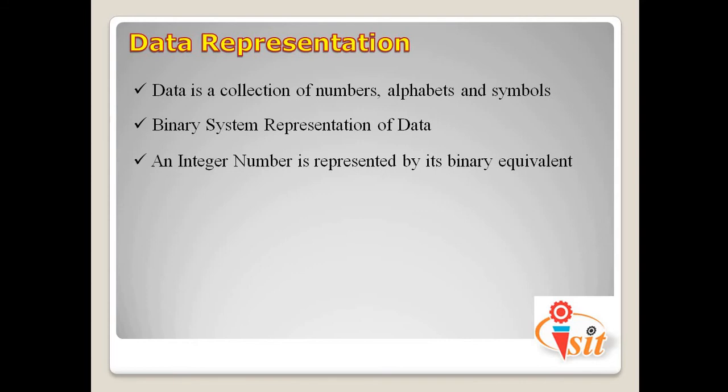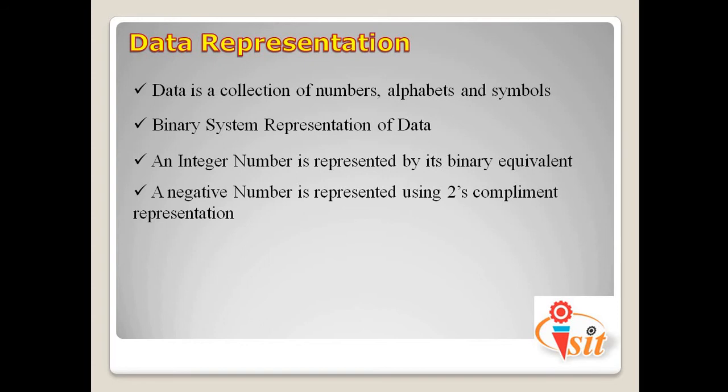If we have integer numbers — as already learned in C programming, like 0, 1, 2, 3 — these are called integer numbers, and they are represented by their binary equivalent. If we have negative numbers like minus 1 or minus 2, those negative numbers are represented using 2's complement representation.